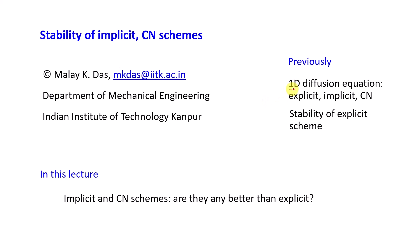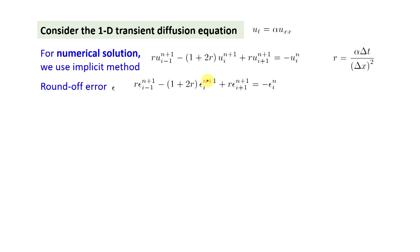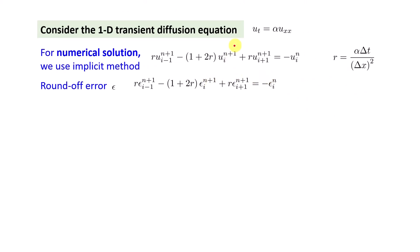We are discussing the one-dimensional transient diffusion equation and have talked about three different schemes to solve it: explicit, implicit, and Crank-Nicholson. We have also discussed the stability of the explicit scheme. Now in this lecture we'll see the stability of the implicit and Crank-Nicholson schemes, following the same procedure as we did for the explicit scheme.